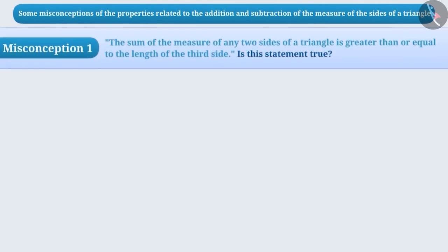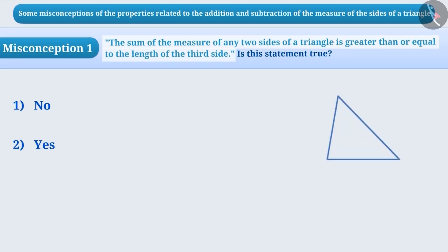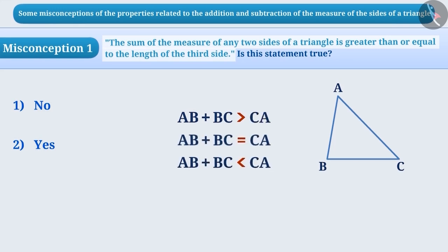Misconception 1: The sum of the measurements of any two sides of a triangle is greater than or equal to the length of the third side. Is this statement true? Some children think that the measurement of the sides of a triangle has no relation with each other. They think that the sum can be greater than, less than, or equal to the third side. Because of this understanding, they give option 2 as the answer, which is an incorrect understanding.